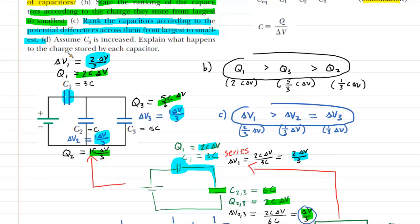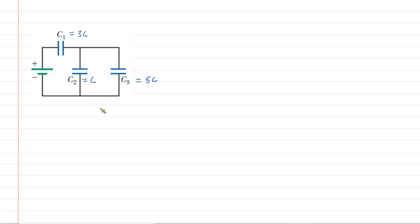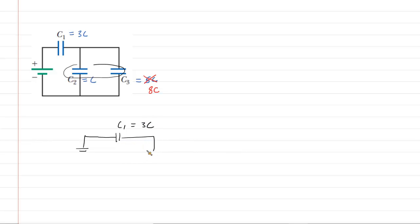Finally, part D: assume that C3 is increased — explain what happens to the charge stored by each capacitor. We change C3 from 5C to 8C (any value larger than 5C works). We combine C2 and C3 in parallel: 1C plus 8C gives C2,3 equals 9C. C1 is still 3C. These new values are drawn in an updated circuit.